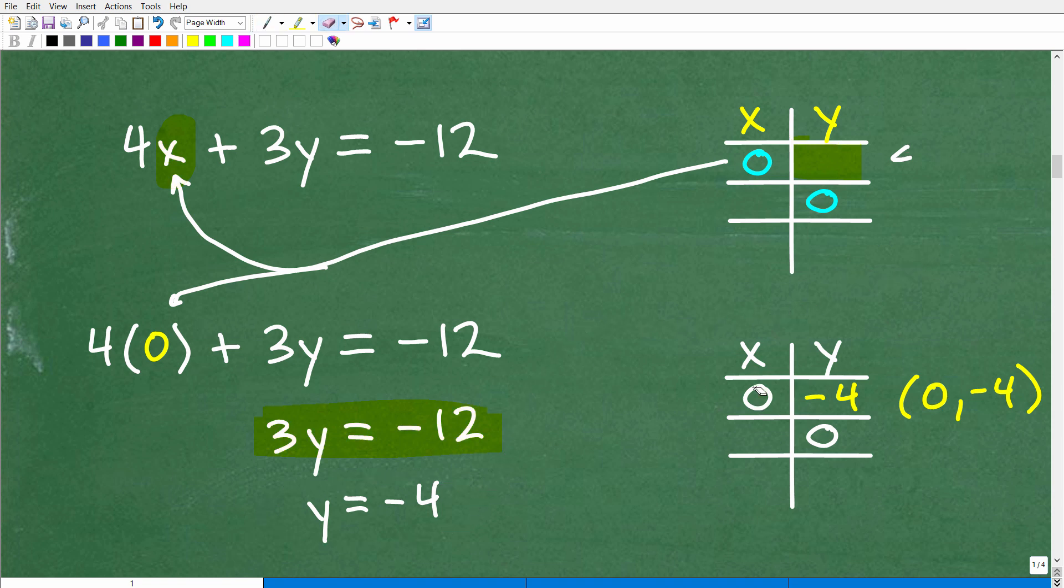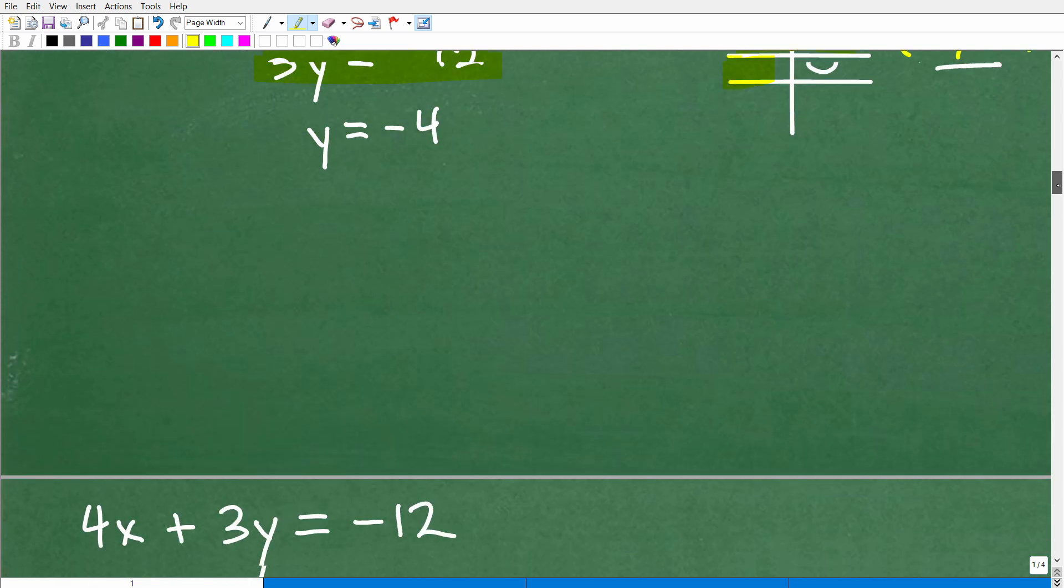But what does this mean? Well, these numbers right here, this X and Y, these are points on the XY plane. This is a coordinate. So when X is 0, Y is negative 4. This point, 0 comma negative 4, is on this line. And it is, in fact, an intercept.